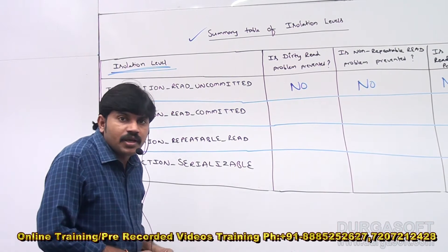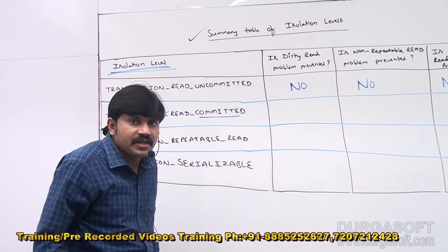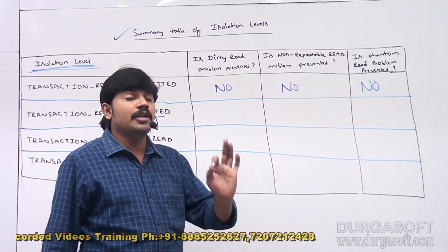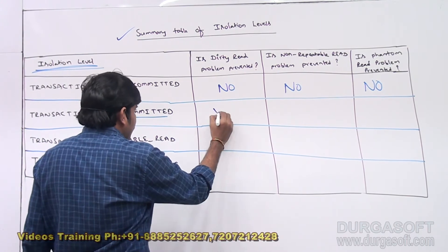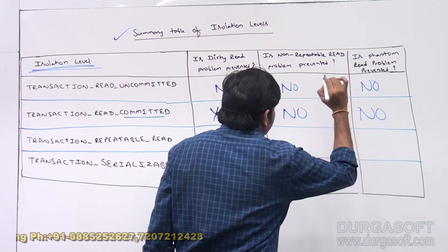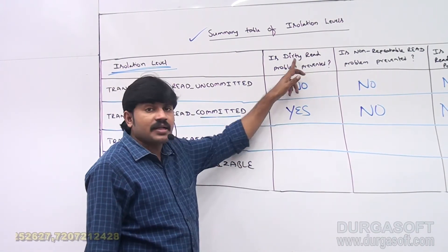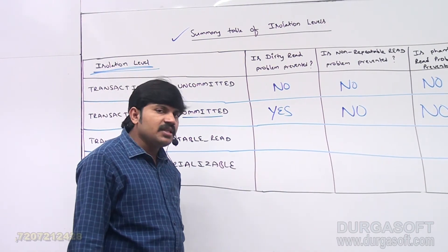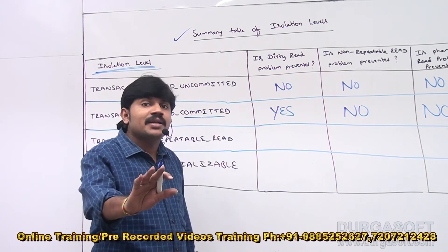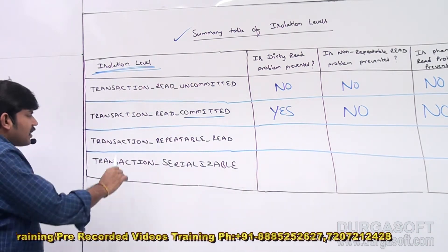The only use of TRANSACTION_READ_UNCOMMITTED is to indicate the database supports transactions — beyond that there is no use. With TRANSACTION_READ_COMMITTED, we can read only committed data; we are not allowed to read uncommitted data. Therefore, the dirty read problem by default will be gone. Note that in the Oracle database, the default isolation level is TRANSACTION_READ_COMMITTED, so dirty read problems are prevented by default in Oracle.